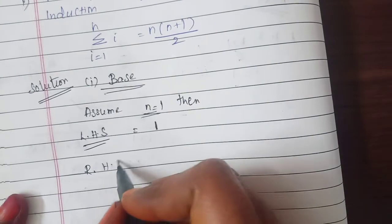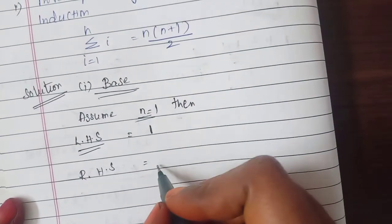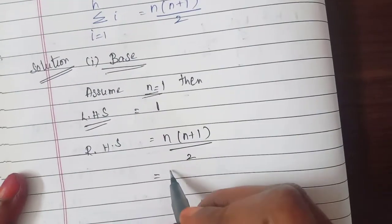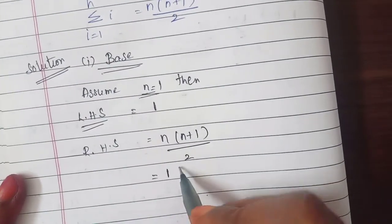So RHS, LHS equal to n into n plus 1 divided by 2. Here we will substitute instead of n, we will have 1.